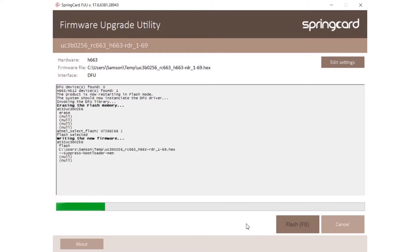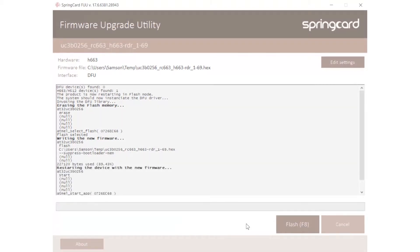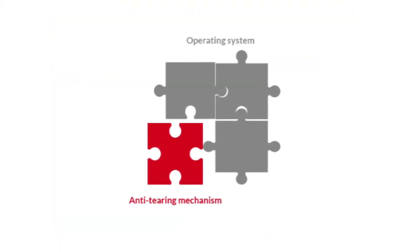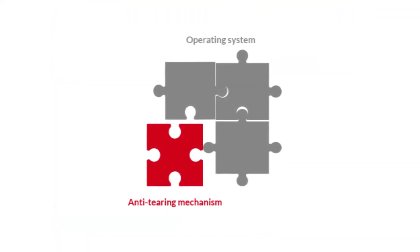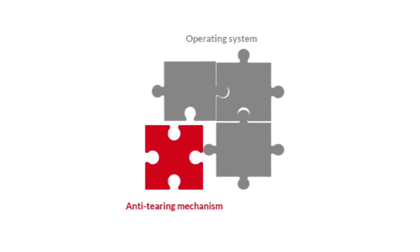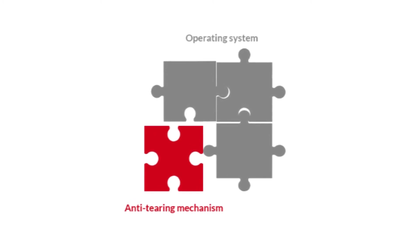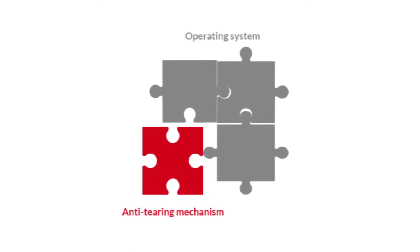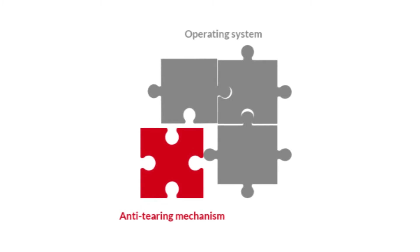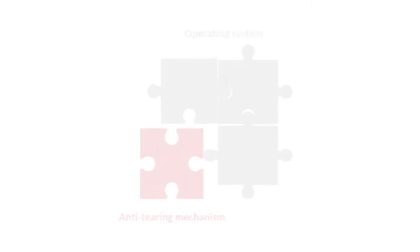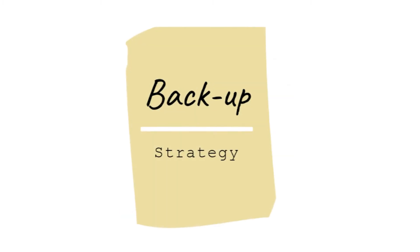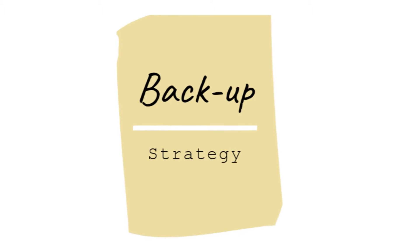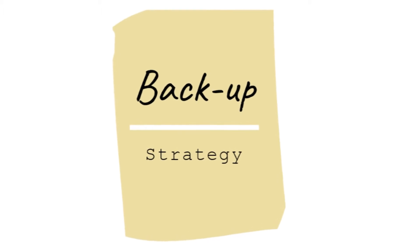Anti-tiering mechanisms, also called transaction mechanisms, provide this functionality. Any anti-tiering mechanism is usually part of the operating system. Therefore, an application doesn't need to take care of tiering events on its own. The basic concept of the anti-tiering mechanism is a backup strategy.